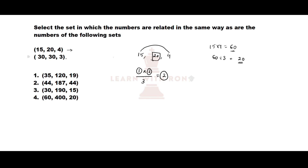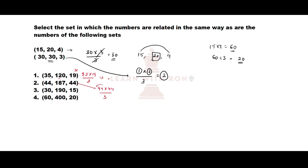Let us verify whether the second set follows this pattern. Applying first number multiplied by third number divided by 3, we get 30, which verifies our pattern. Checking the options: for option 1, 35 is not divisible by 3 and 19 is not divisible by 3, so we get a decimal, not a natural number — not our option. For option 3, 44 into 44 divided by 3 again gives a decimal — not our option. For the next option, 30 into 15 divided by 3 gives 150, but they have given 190, so it is also not our option. Let us check the fourth option.